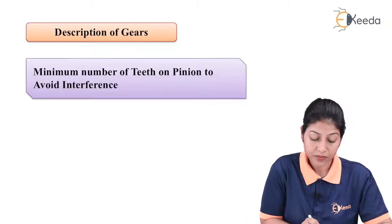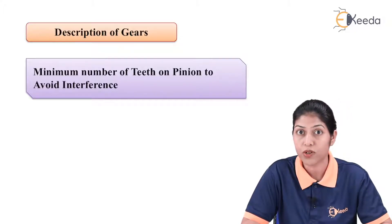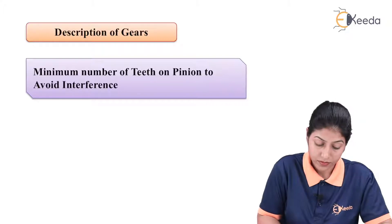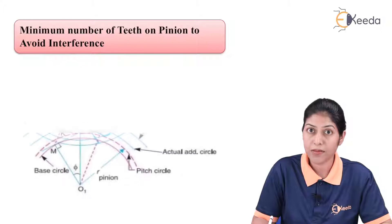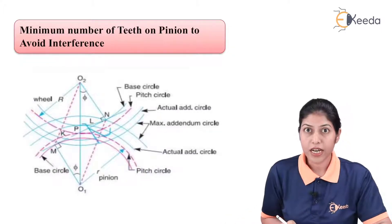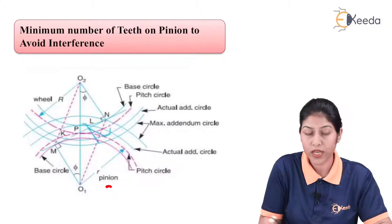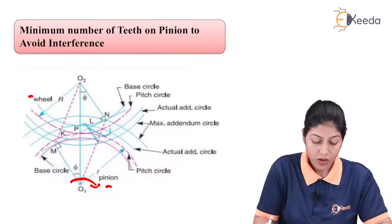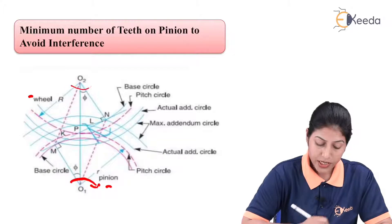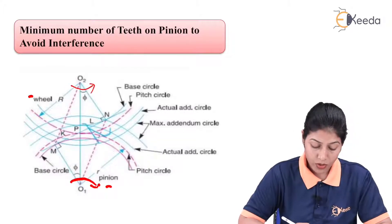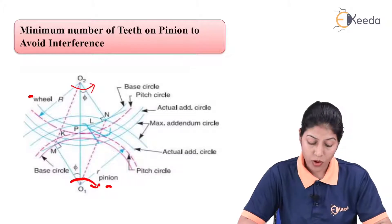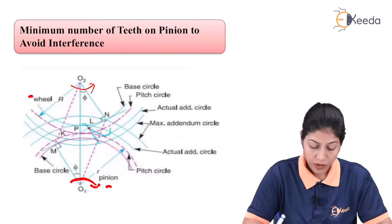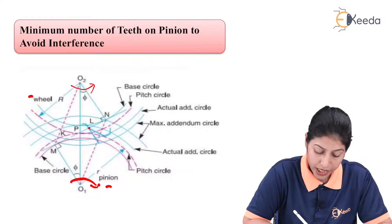Now, how can we define the number of teeth — how many teeth we need on the pinion to avoid interference? Using this diagram, we consider two gears: one is the pinion and one is the wheel. The pinion is the driving gear rotating in the clockwise direction, and the wheel rotates in the opposite direction. O1 and O2 are the centers, and the distance between them is the center distance. To define the length of path of contact, we consider the contact point between two involute teeth and draw a tangent passing through that contact point.